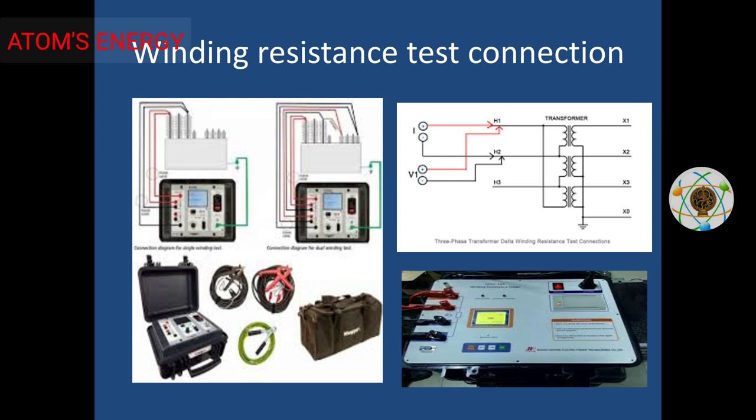That is the winding resistance test and its connections. The kit used is WRM — winding resistance meter. If you have an advanced kit, you can connect directly to the RYB. You can connect directly to the kit and the connections. If you have a four-terminal connection with two voltage and two current leads, we can check DC. The next test after ratio test, magnetic balance, and magnetizing current is winding resistance — you do an AC test first and then DC. DC and AC give equal and proper values.